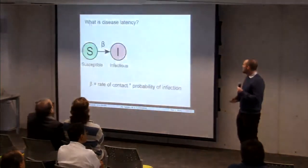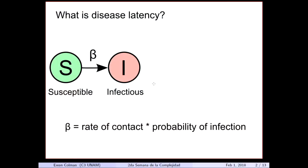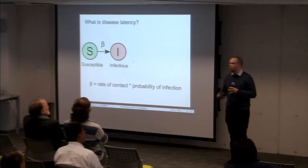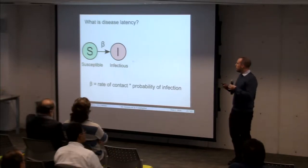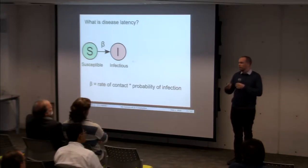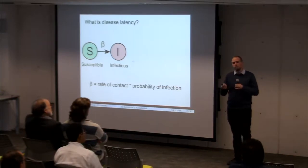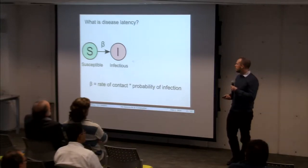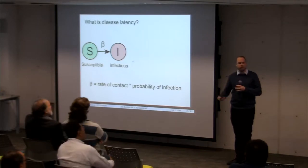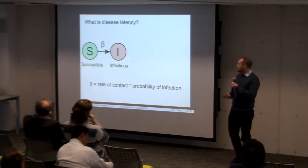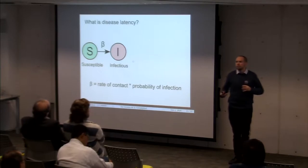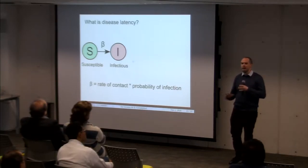The easiest way to explain it is to talk about how we model infectious diseases. Normally we would have a population of agents, and each individual can be in one of a number of states. The simplest example is when you have only two states: susceptible or infectious. When two agents come into contact, the susceptible individual can transition to an infectious state. The parameter beta tells you the probability that that transition is going to occur. Intuitively, if beta is very large, transitions happen more frequently and epidemics are larger.